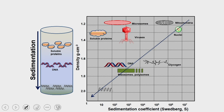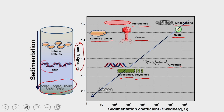Looking at different types of biological molecules, you have microsomes, mitochondria, nuclei, viruses, soluble proteins, DNA, ribosomes, polysomes, and glycogen. All these molecules have different sedimentation coefficients and different densities. When you spin them down, all these biomolecules will separate from each other because they settle down at different steps. In the first round one molecule settles down, in the second round DNA settles down, and in the third round the soluble protein settles down.